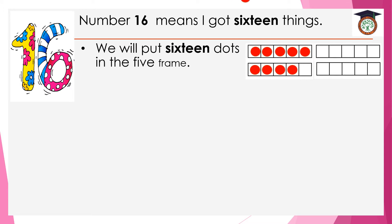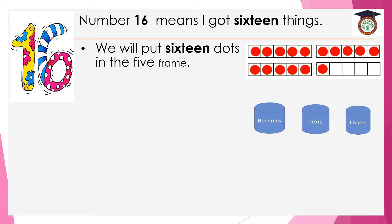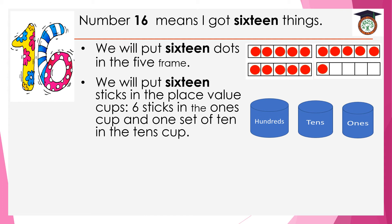...9, 10, 11, 12, 13, 14, 15, 16. Now we will put 16 sticks in the place value cups: six sticks in the ones cup — 1, 2, 3, 4, 5, 6 — in the ones cup, and one set of ten in the tens cup.